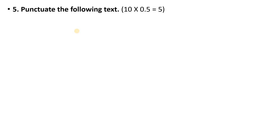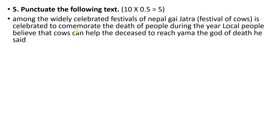Next, punctuate the following text. There are some mistakes in the same way as capitalization errors. For example: 'Among the widely celebrated festivals in Nepal, Gai Jatra is celebrated to commemorate the death of people during the year. Local people believe that cows can help the deceased to reach Yama, the god of death.' There are 10 mistakes in these sentences. If you can correct one mistake, you will be awarded 0.5 marks.